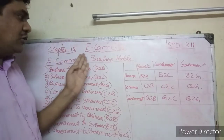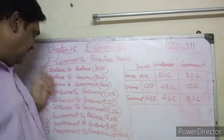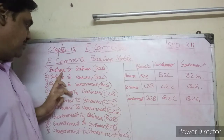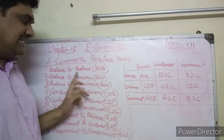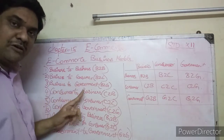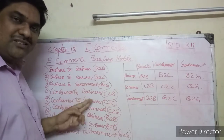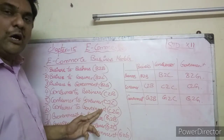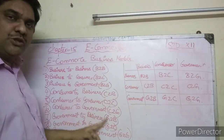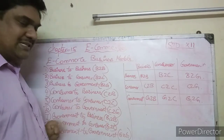In this video, I am going to explain the e-commerce business models. Actually, there are 9 business models. These are: business to business, business to consumer, business to government, consumer to business, consumer to consumer, consumer to government, government to business, government to consumer, and government to government. So there are 9 business models.